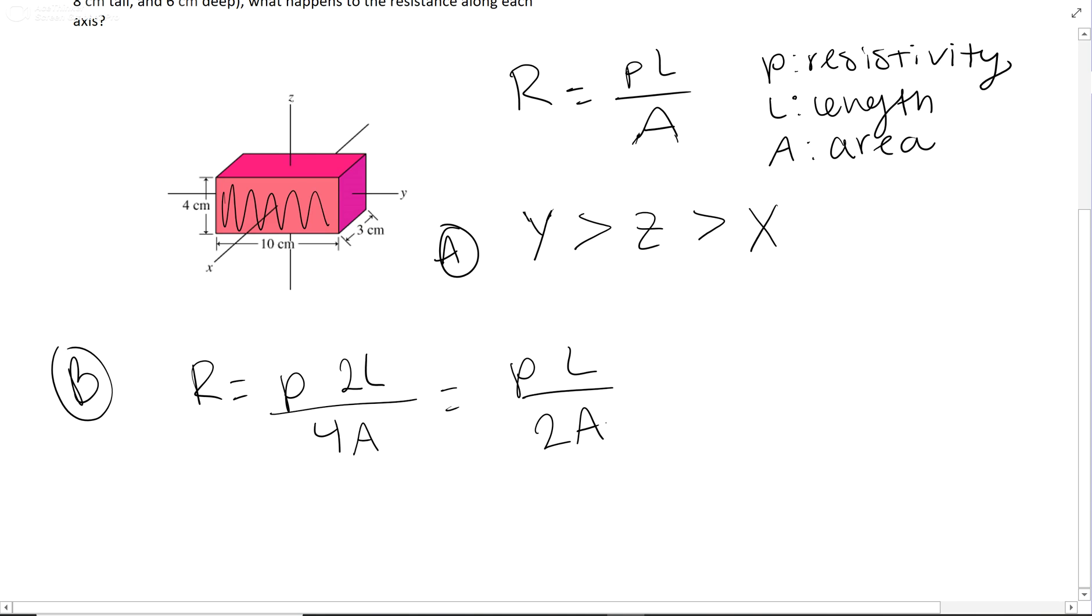So if you compare this new one to the original resistance, you can see that it's one half of ρL over A. So resistance has been halved.